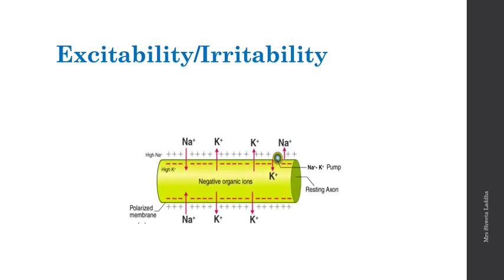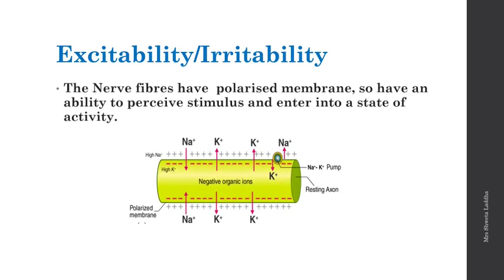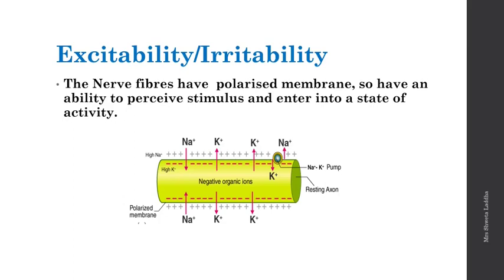Let us start first with excitability or irritability. Nerve fibers are in a polarized state, meaning on the outer side of the membrane there are many positive ions — sodium ions and potassium ions. On the inner side there are proteins, chlorine, and potassium with negative charge. Because nerve fibers are in polarized state, they have the capacity to receive a stimulus and then enter a state of activity, carrying out conduction. This is excitability.